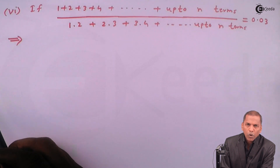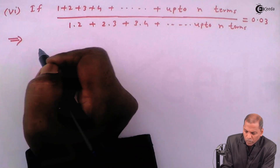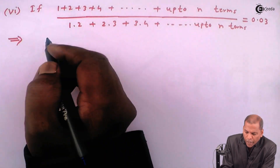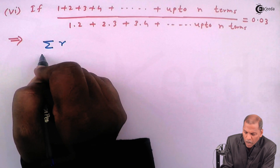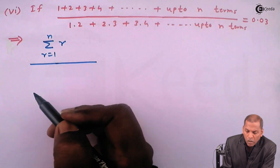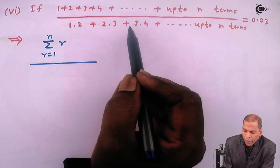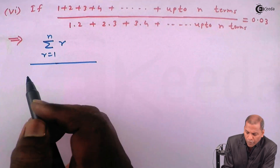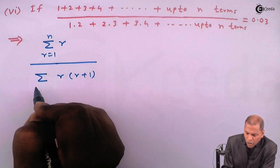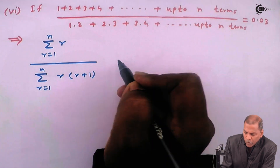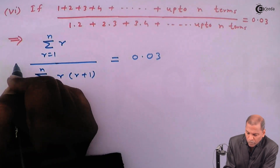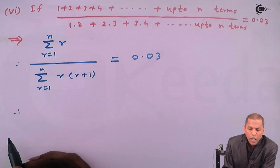The solution: for the numerator terms one plus two plus three plus four up to n, we write summation r, where r takes value one to n. Then totally divided by the denominator — that is one into two plus two into three plus three into four up to n terms — we write summation r into (r plus one), where r takes value one to n, and that equals 0.03.